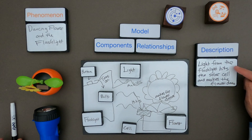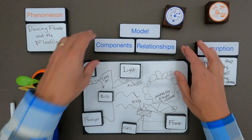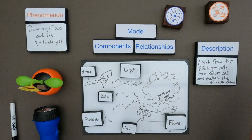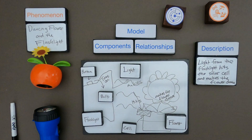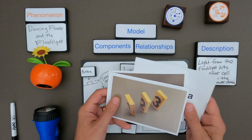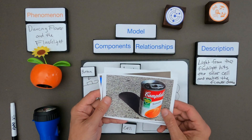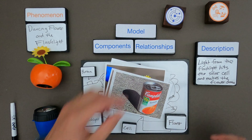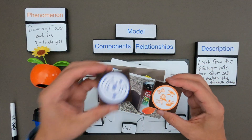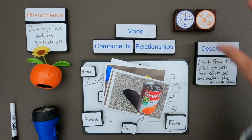My description is: light from the flashlight hits the solar cell and that makes the flower dance. These are all the elements of my model - it's just a conceptual model of how it works. Now that I've shown you how to model, you could do the model of dominoes, or even model how light and shadow work. These are simply models - they are representations of a phenomena, but they are not the phenomena themselves. I hope that was helpful.